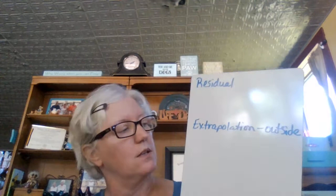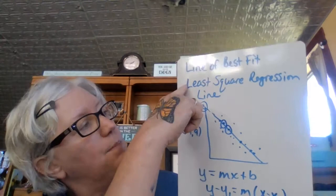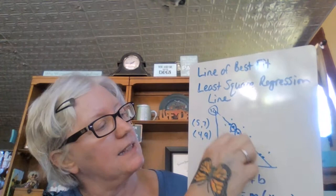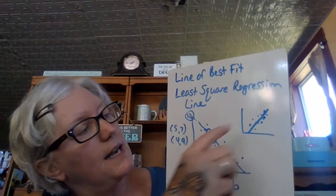So extrapolation is outside of the graph — way higher or way lower than your data set. If it's interpolation, then it's inside of the graph. Interpolation is inside, extrapolation is outside. For example, with a positive correlation where the data dots go in a positive direction, any data between the lower bound and upper bound of that data would be interpolation, but if you wanted to predict something way beyond that range, that would be extrapolation.